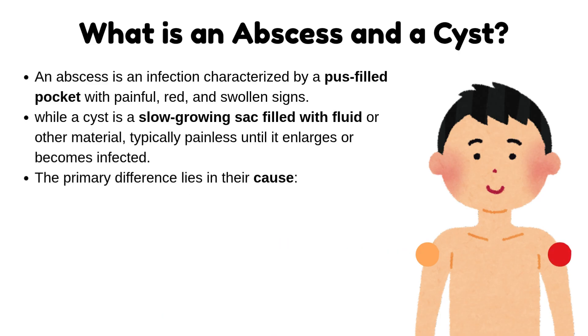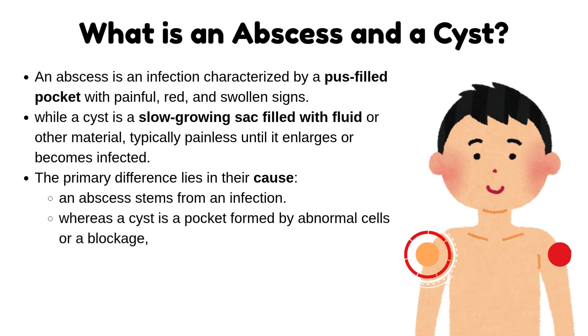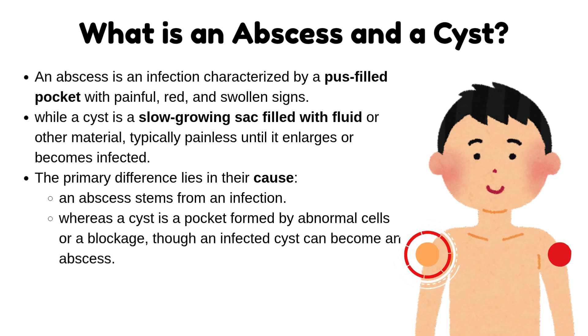The primary difference lies in their cause. An abscess stems from an infection, whereas a cyst is a pocket formed by abnormal cells or a blockage, though an infected cyst can become an abscess.